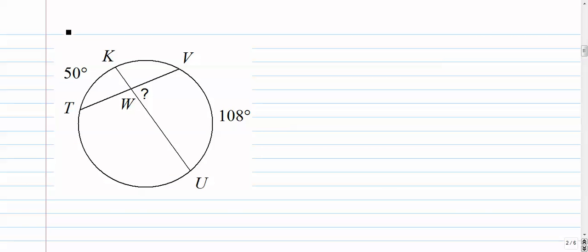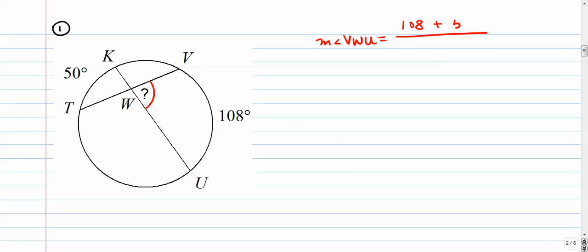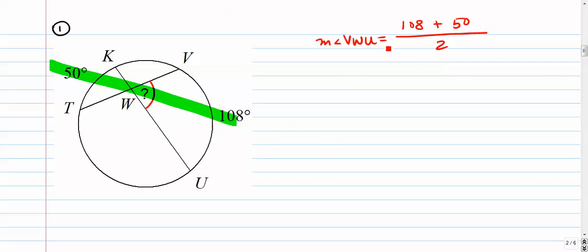Number one — we're looking for angle VWU. The measure of angle VWU equals 108 plus 50 over 2. The cool part about this theorem is that they're all in a nice straight line — you would never want to take an arc with a non-corresponding angle and arc. Keep everything nice and straight. So the measure of angle VWU is 158 over 2, which is 79 degrees.